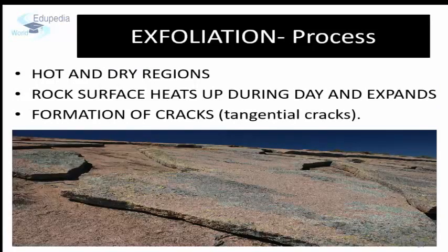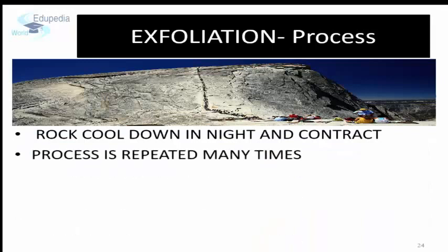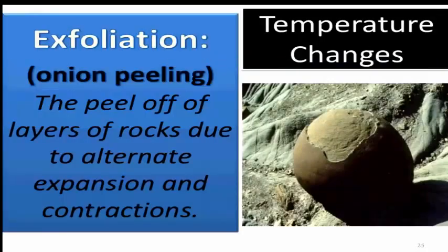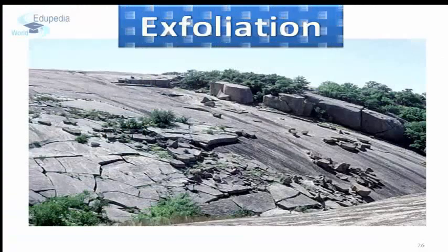This process in which rocks seem to shed their skin is called exfoliation. During the day, a thin upper layer of the rock gets heated up and expands, causing the formation of cracks parallel to the surface, called tangential cracks. At night, the heated-up layer cools down and contracts. The contraction causes the tangential cracks to expand and new vertical cracks to form, resulting in the separation of the thin layer and exposing the rock to further insolation weathering. Exfoliation is also known as onion peeling, as it is similar to the peeling of layers of an onion one by one.